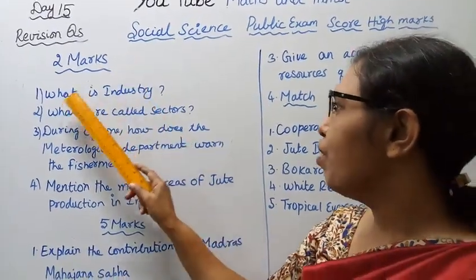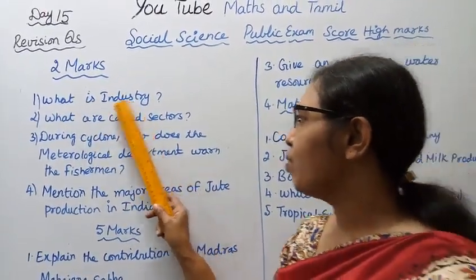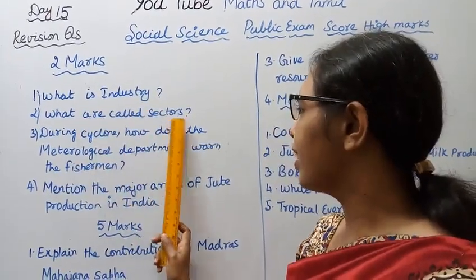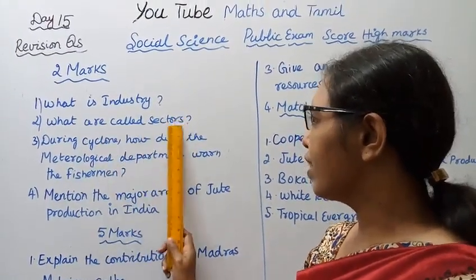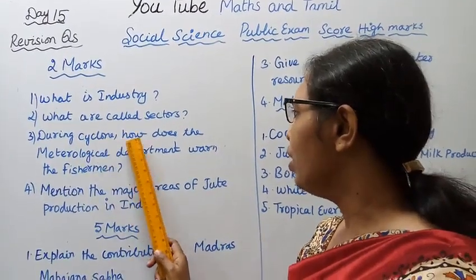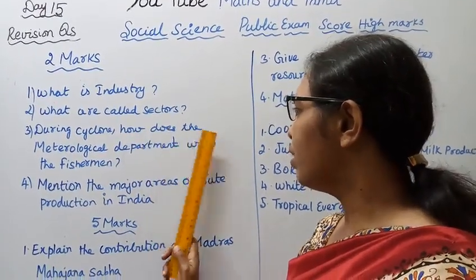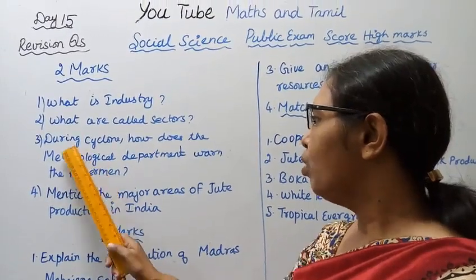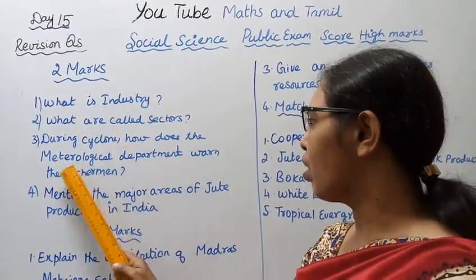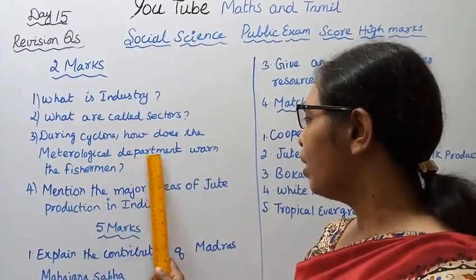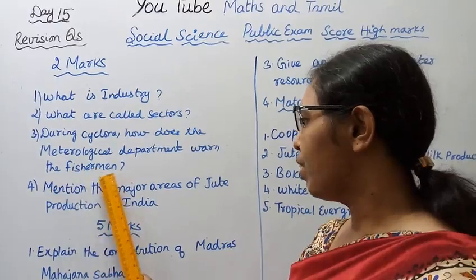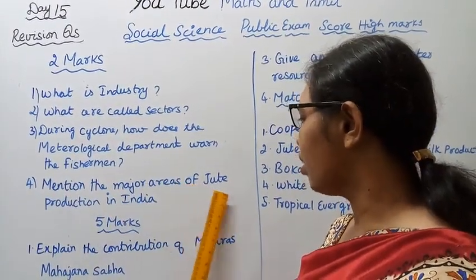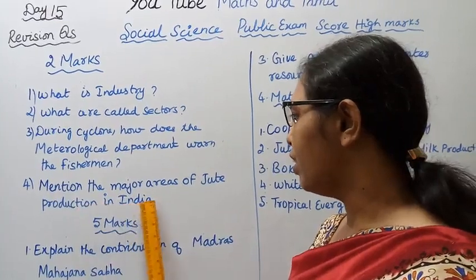Two marks. First one: What is industry? Second one: What are called sectors? Third one: During cyclone, how does the meteorological department warn the fishermen? Fourth: Mention the major areas of jute production in India.